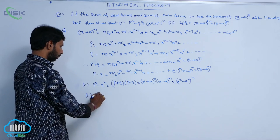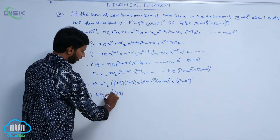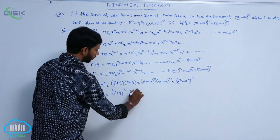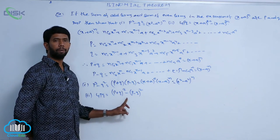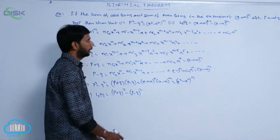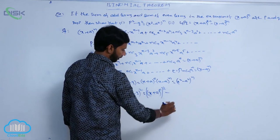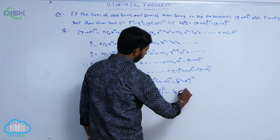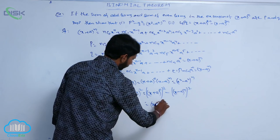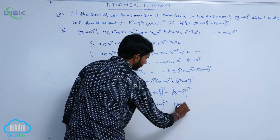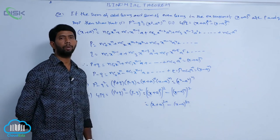For the second bit: 4pq can be written as (p + q)² - (p - q)², since 4ab = (a + b)² - (a - b)². Here p + q = (x + a)^n and p - q = (x - a)^n, so 4pq = (x + a)^n)² - (x - a)^n)² = (x + a)^2n - (x - a)^2n.